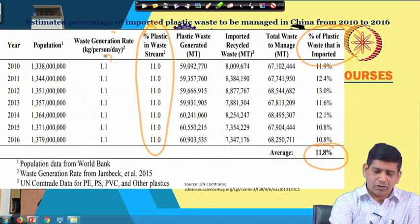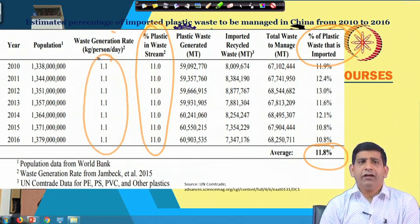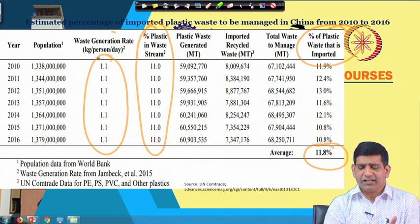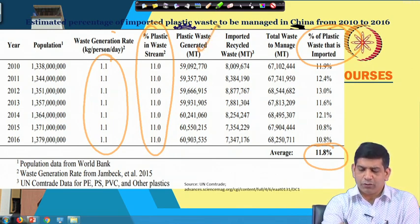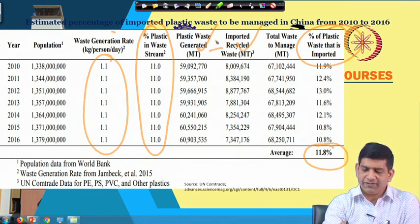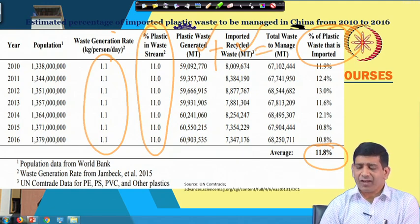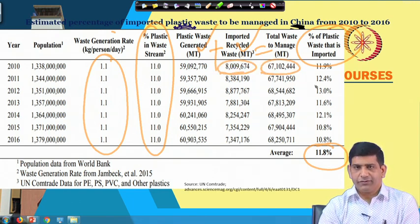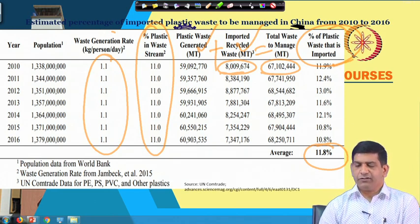The waste generation rate is also kept constant at 1.1 kg per person per day, which is also not really what usually happens. But when you do some calculations you make some assumptions. Keeping all those factors and assumptions in place, they have calculated how much plastic waste is generated, how much is imported, and the total waste that is managed — which is the sum of both. Based on this, the percentage imported is calculated by dividing the imported number by the total and multiplying by 100, giving values of around 12 percent.